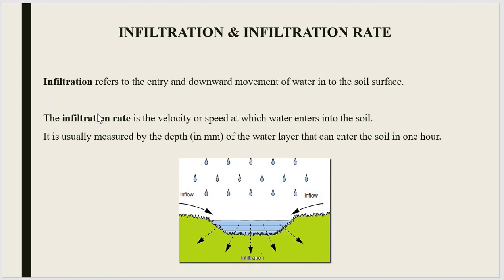Infiltration refers to the entry and downward movement of water into the soil surface. When rain falls onto the ground level, some of the water gets stored in the top layers of the ground and then slowly moves downward into the soil layers — that process is called infiltration. When the water goes much deeper into the soil layers, it is called percolation. So there is a difference between the terms infiltration and percolation.